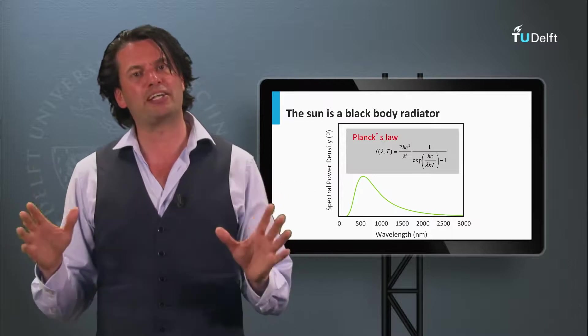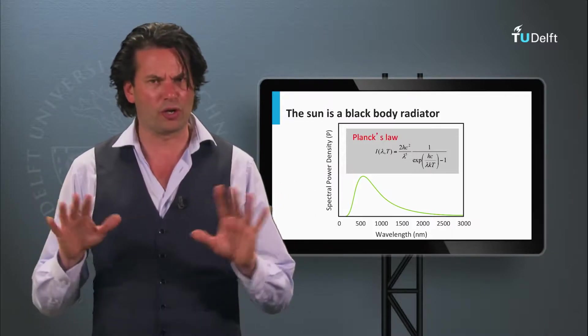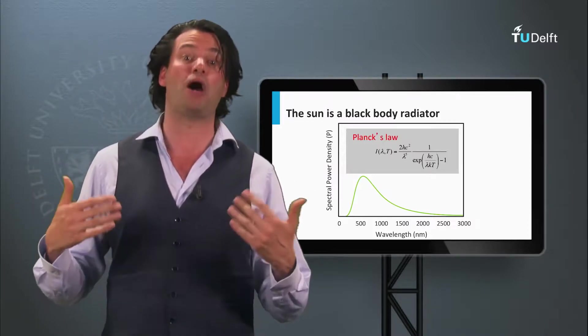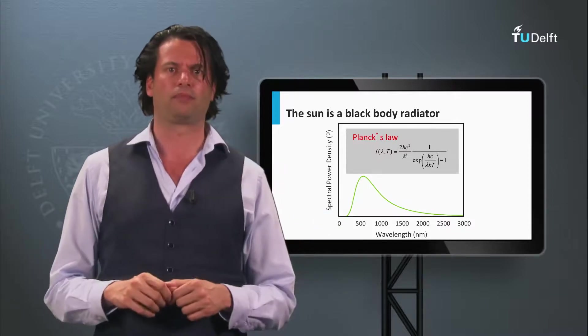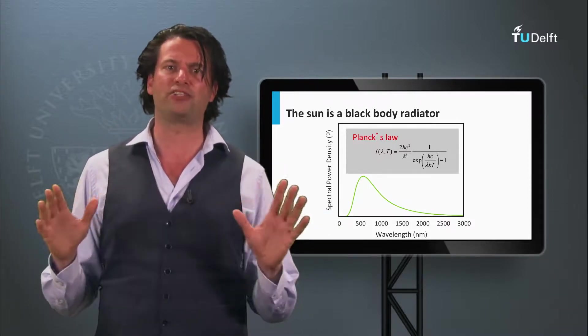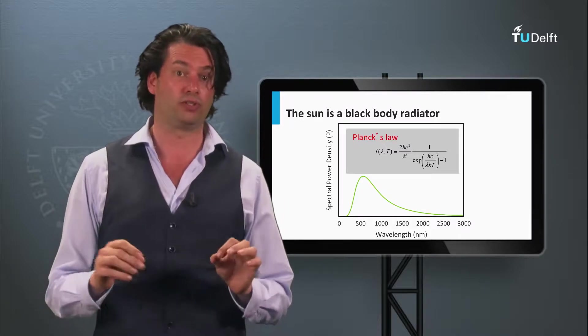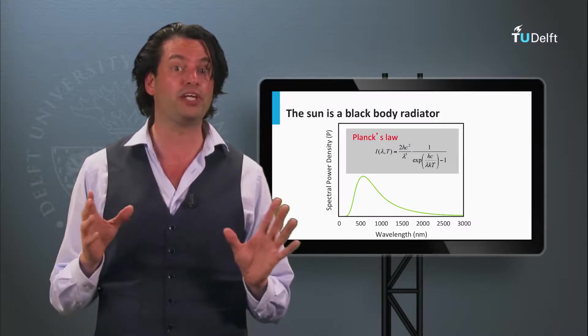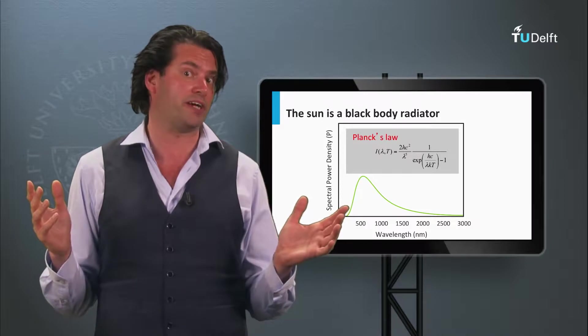How does the spectrum of the Sun look like? Or in other words, how does the spectral power density function look like? To human eyes, the Sun is a bright object in the sky. The Sun, a so-called black body radiator. What is a black body radiator?